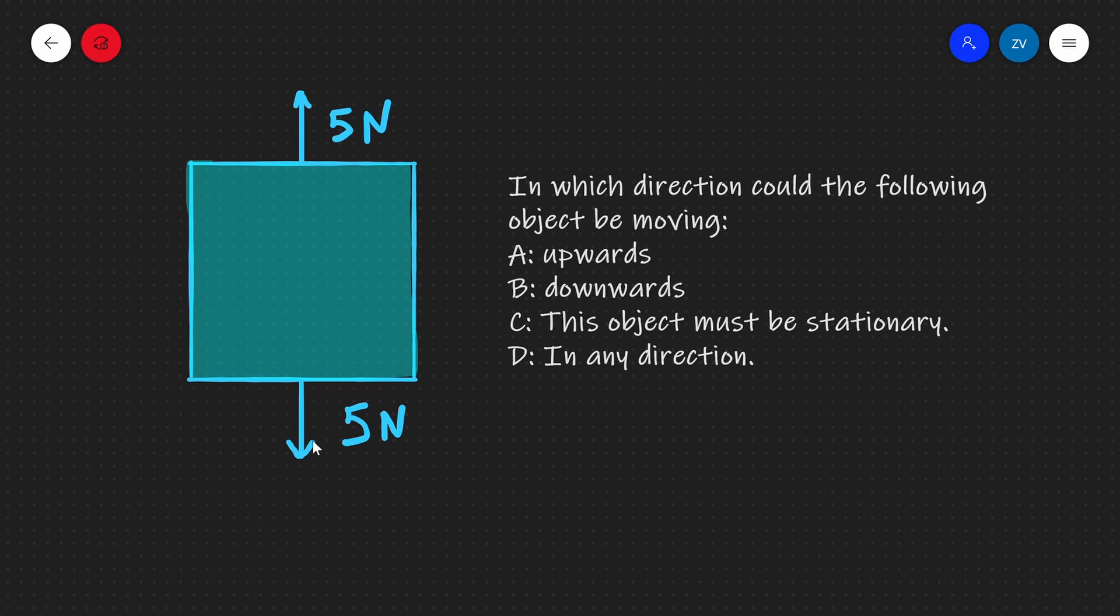Now, in which direction could this object be moving? A upwards, B downwards, C this object must be stationary, or D in any direction.